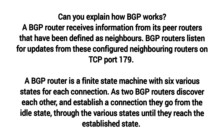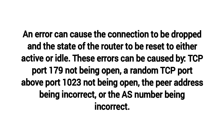Can you explain how BGP works? A BGP router receives information from its peer routers defined as neighbors. BGP routers listen for updates from configured neighboring routers on TCP port 179. A BGP router is a finite state machine with six states for each connection. As two BGP routers discover each other and establish a connection, they go from the Idle state through various states until they reach the Established state. Errors can cause the connection to be dropped, caused by TCP port 179 not being open, an incorrect peer address, or an incorrect AS number.